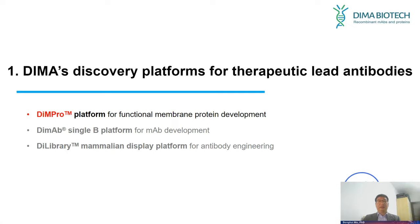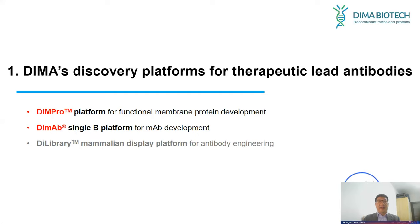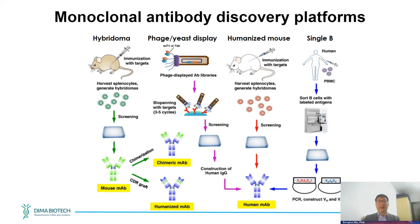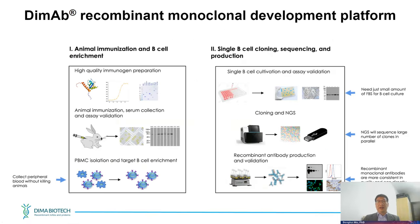Although DMA Biotech is an antibody company, we focus heavily on functional protein development because we truly believe that to get the best antibody you need the best functional protein as an immunogen. For monoclonal antibody development, there are different platforms ranging from traditional hybridoma and phage/yeast display to the most recent cutting-edge technology called single-B. Here is DMA Biotech's Single-B technology platform.